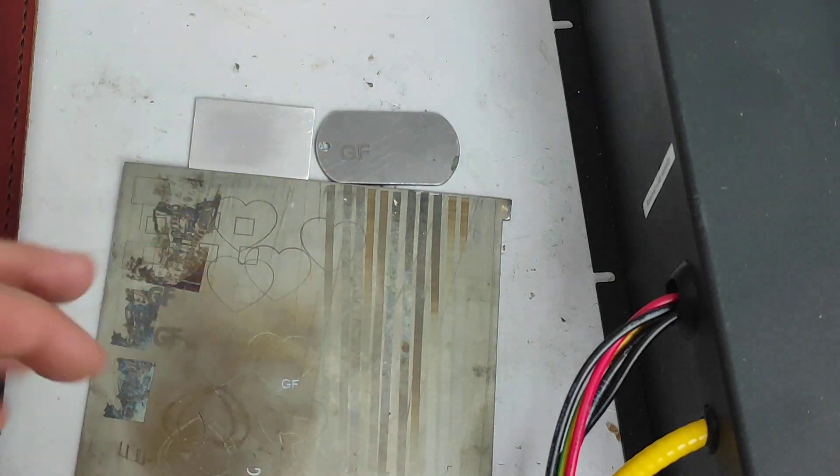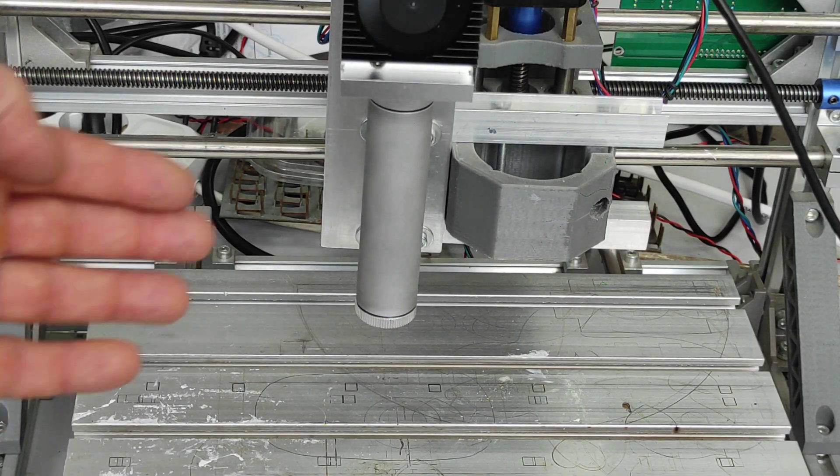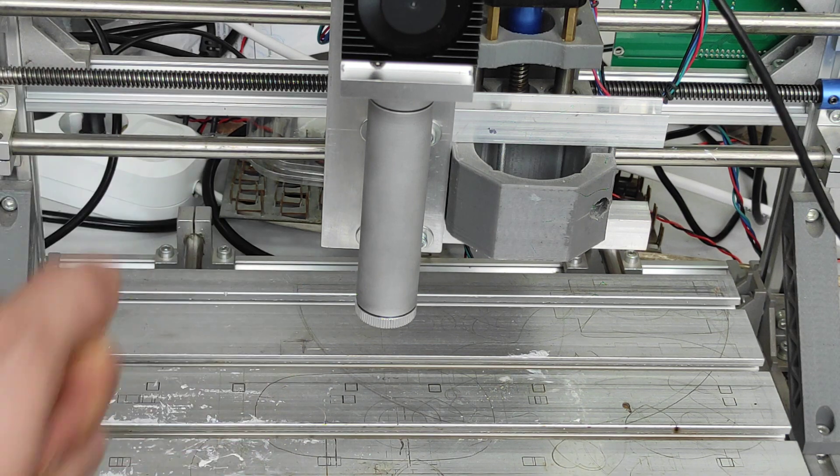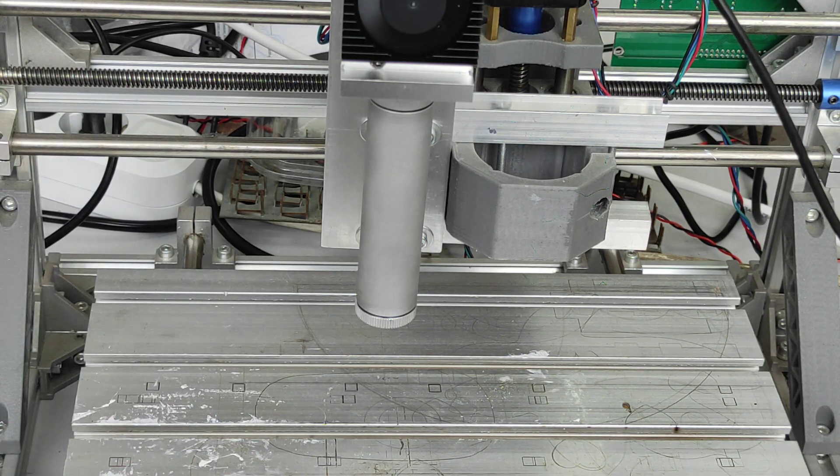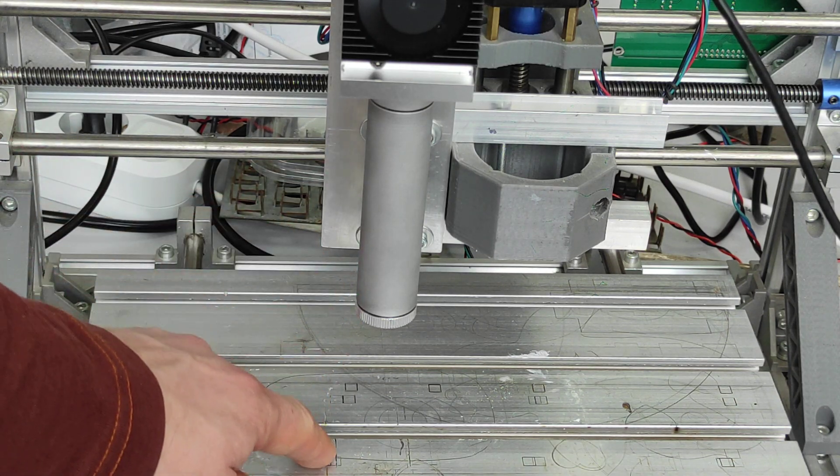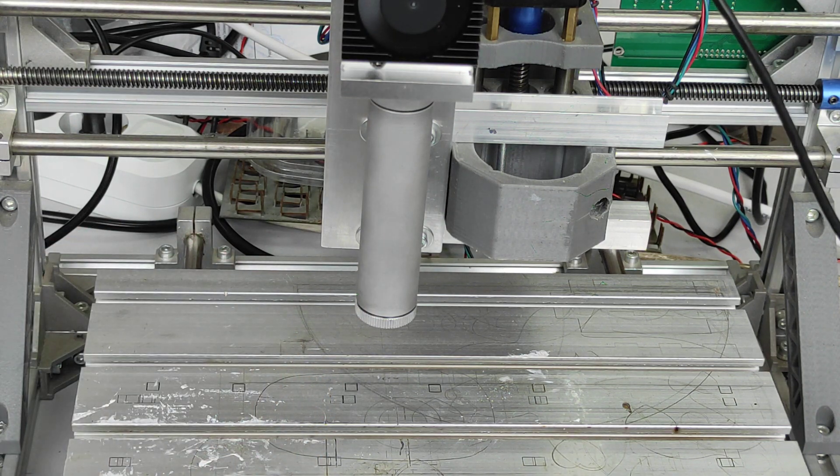We're using a 10 watt DPSS laser module and infrared and special custom lens system. This is our new custom lens optical system and here we use a 30 millimeter focusing lens and the focal range from the lens to surface is about 40-45 millimeters.